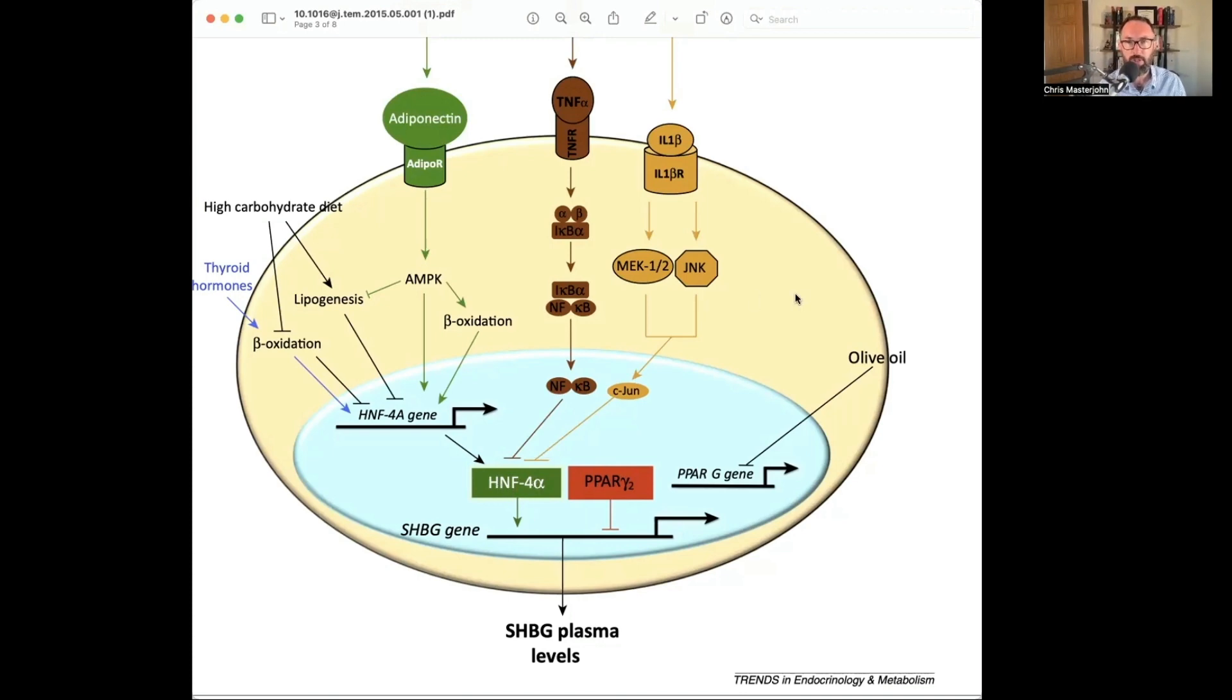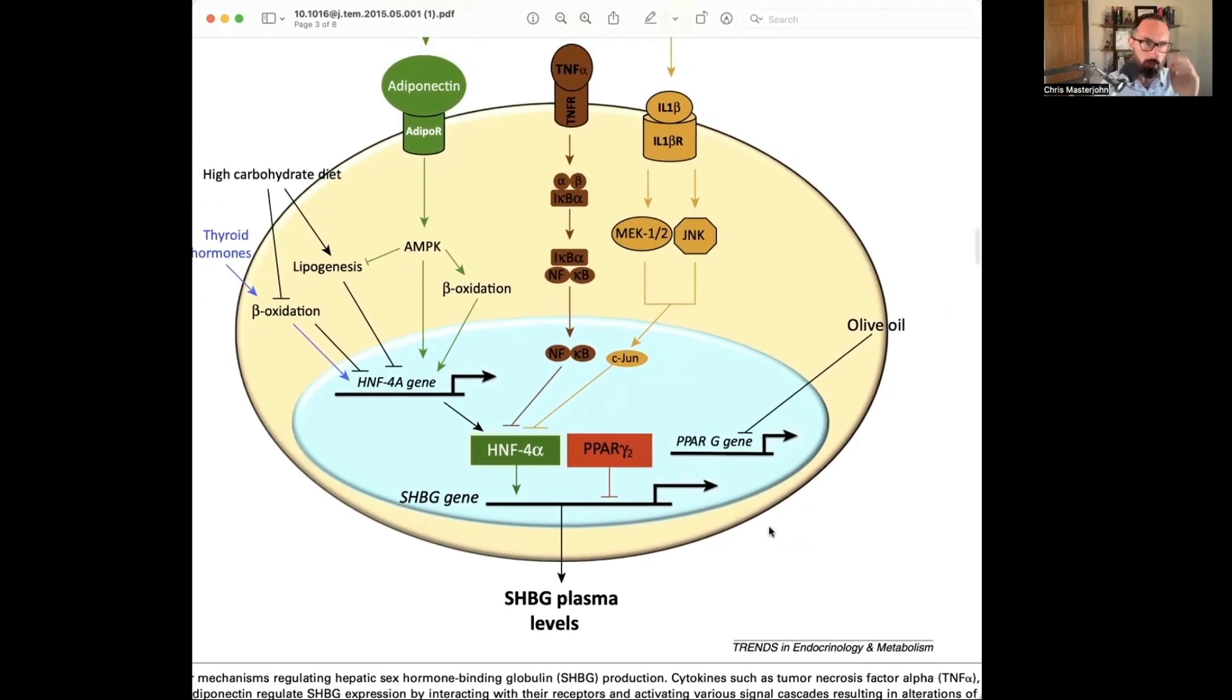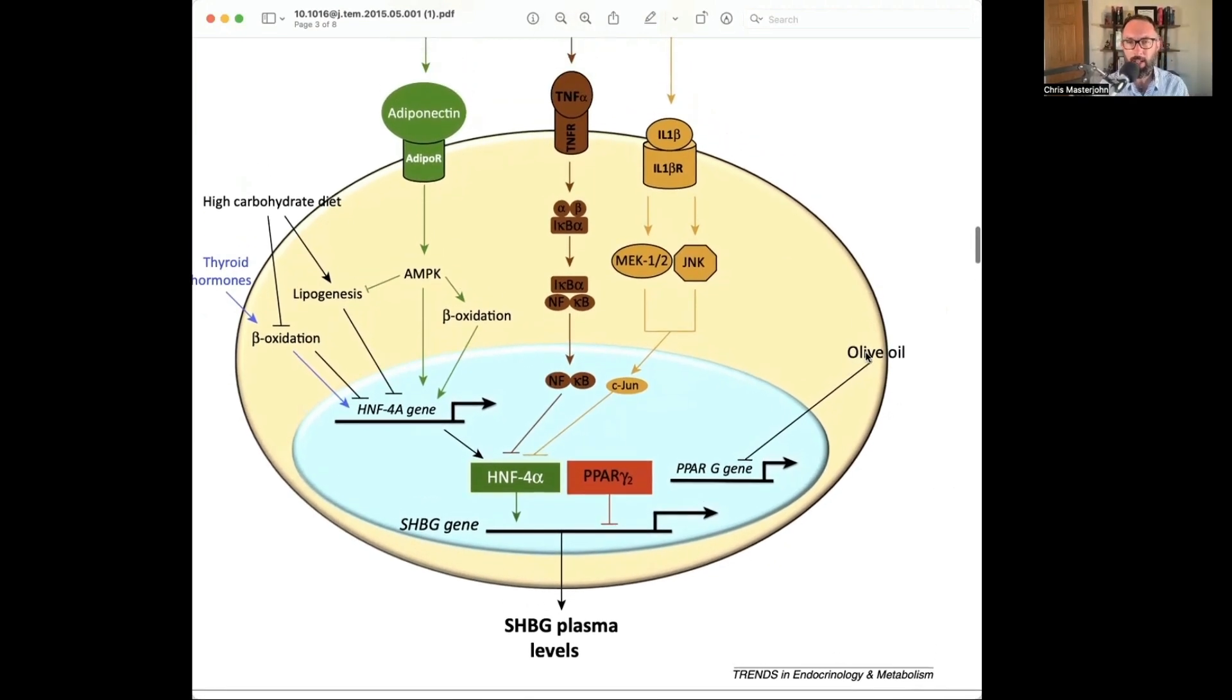I'm not going to focus on the transcription factors. I'm going to focus on the things with dietary relevance. One thing that they note is that olive oil stimulates the PPAR gamma gene, which in turn suppresses the SHBG expression. And so they're saying that olive oil...